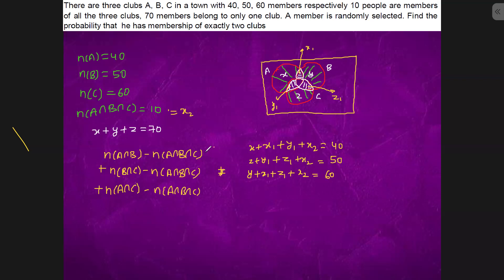So we will solve this equation, this complete equation here. So now n(A∩B) minus n(A∩B∩C), so it is what?